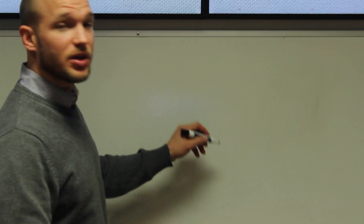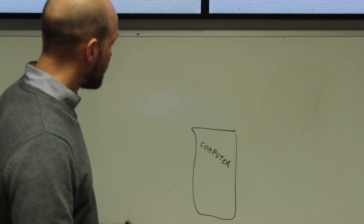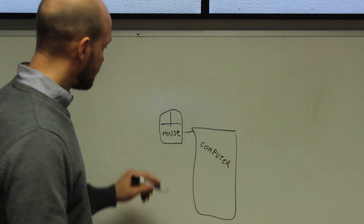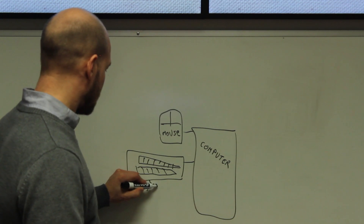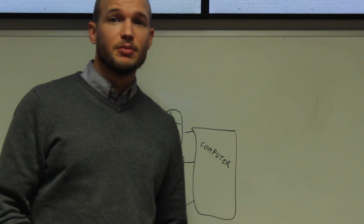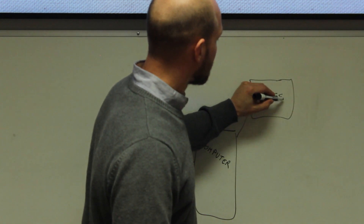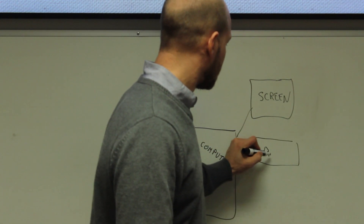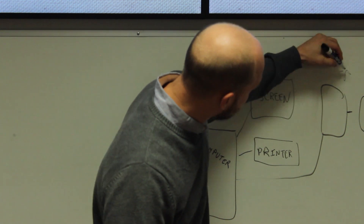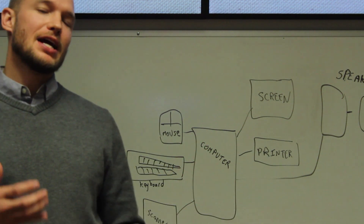Imagine you have a desktop computer. You have inputs going into the computer: first, a mouse; second, a keyboard; and third, a scanner. Those are your inputs. For outputs you have your monitor, a printer, and speakers. I apologize for the rough drawing, but hopefully that starts to get you in the mental frame of where we're going — and you'll see it on the next drawing.